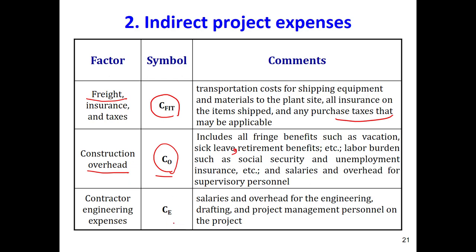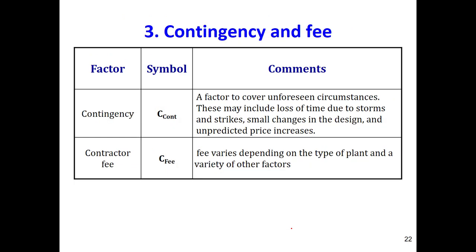We also include contractor engineering expenses — for each job such as construction, installation, and startup, we need a contractor. Project management costs are also included. These are collectively called engineering expenses or engineering costs. The third category is contingency and fees, covering unpredictable future costs such as stormy weather delays, labor strikes, small design changes, or unpredicted price increases.